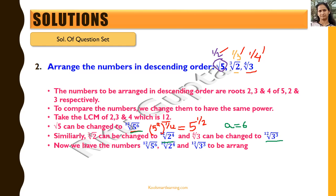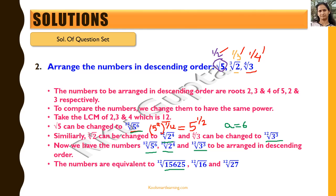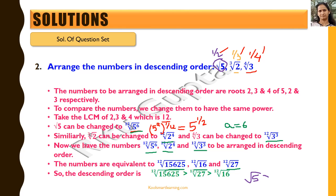Now we have the numbers as the 12th root of 5 raised to power 6, the 12th root of 2 raised to power 4, and the 12th root of 3 raised to power 3. These are equivalent to the 12th root of 15625, the 12th root of 16, and the 12th root of 27. Since the roots are the same, the largest base gives the largest number, so the descending order is 12th root of 15625 > 12th root of 27 > 12th root of 16. That means square root of 5 > 4th root of 3 > cube root of 2.